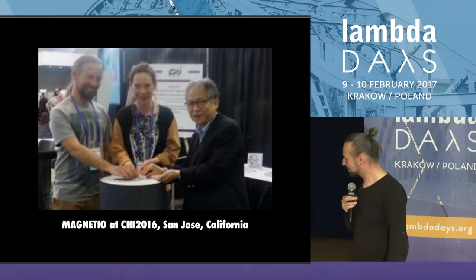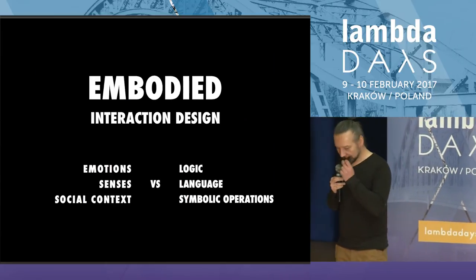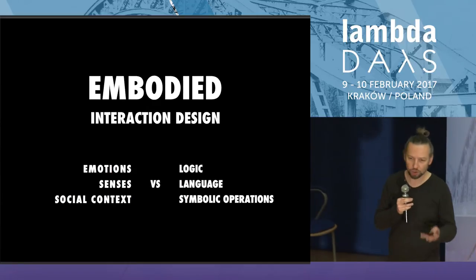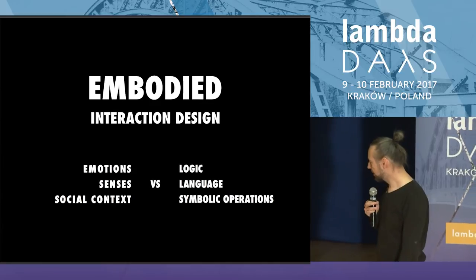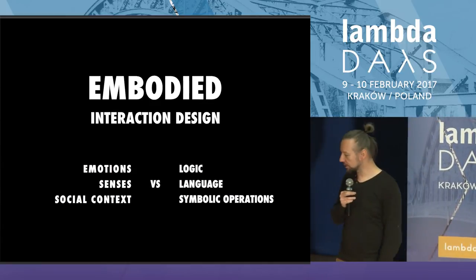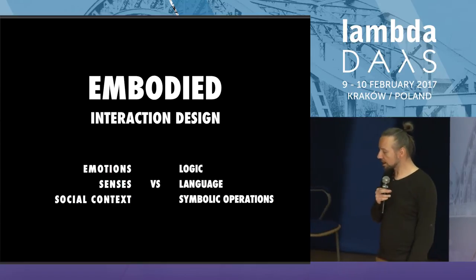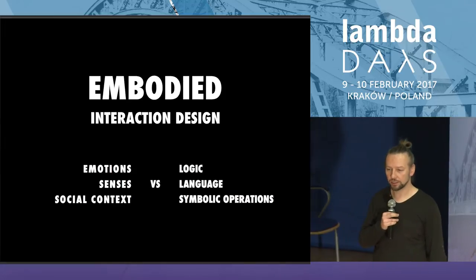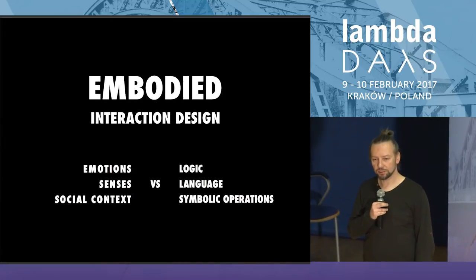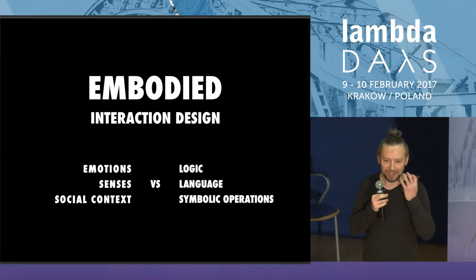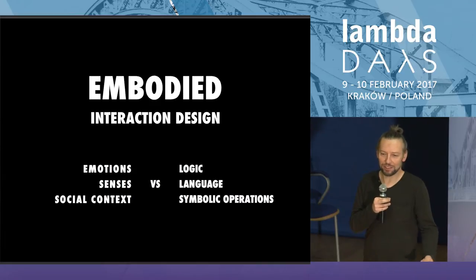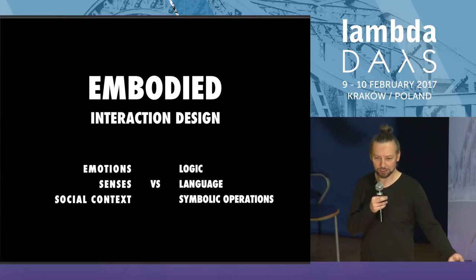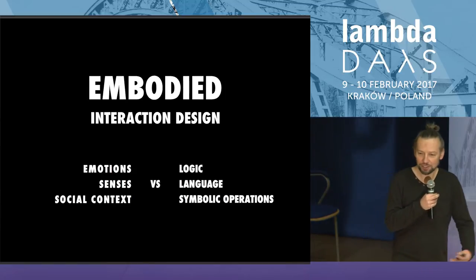So let's summarize: embodied interaction design is more connected with emotion, senses, and social context. This social context is very important for us. But if you design for screens, for some abstract thinking, you are more connected to logic, language, and abstract thinking. And our brain is not good at thinking — if you try to think about something, it's very hard. You have to press your brain to think. Because our brain was not developed for thinking; it was developed for emotion, for pattern recognition, for being in social context — not for abstract thinking.